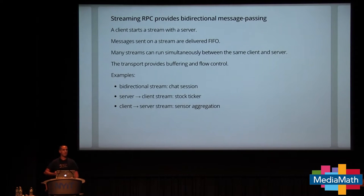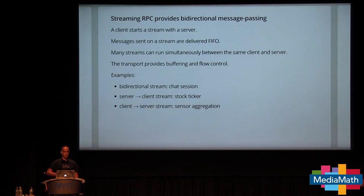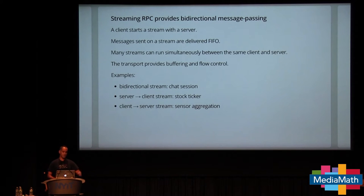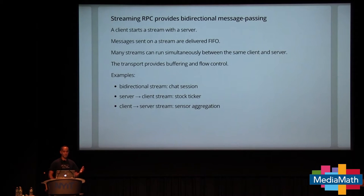In streaming RPC, we have bidirectional message passing — which should sound familiar as bidirectional message passing between goroutines. A client starts a stream with a server; messages are sent on a stream and delivered FIFO. The client can have many goroutines running multiple streams with the same server as well as with other servers. The transport provides buffering and flow control over each connection. A bidirectional stream might be something like a chat session; a server-to-client stream might be a stock ticker; client-to-server might be sensor aggregation.